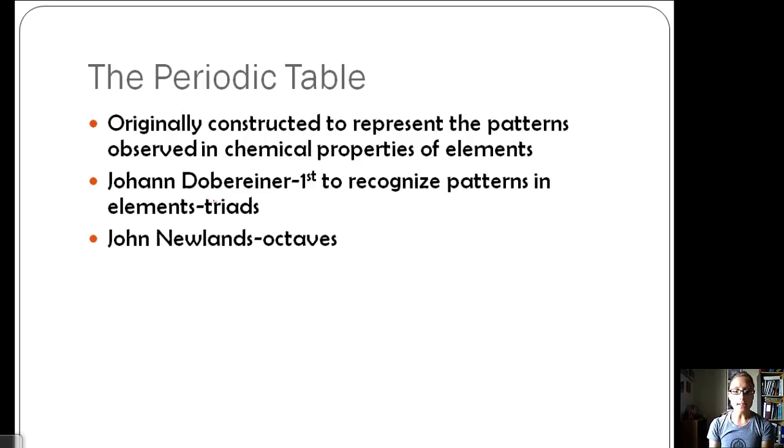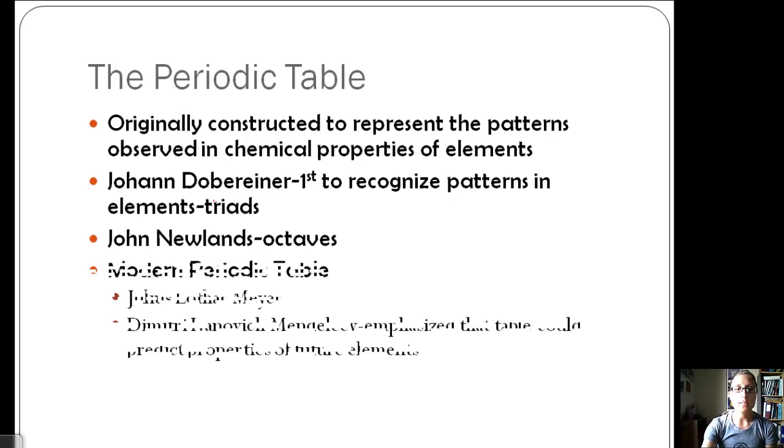Then we had John Newlands, who went from triads to octaves, saying that he was finding patterns between eight elements. Our modern periodic table was contributed to by Julius Meyer and Mendeleev, and he emphasized that the table could predict properties of future elements. That's why his was so revolutionary, because he left these spaces, and then later on elements were discovered that fit into those spaces.